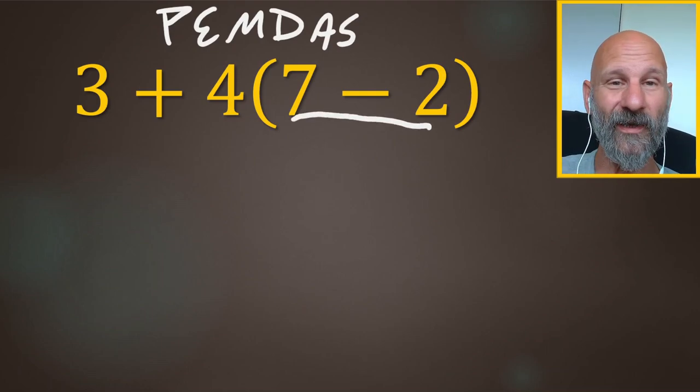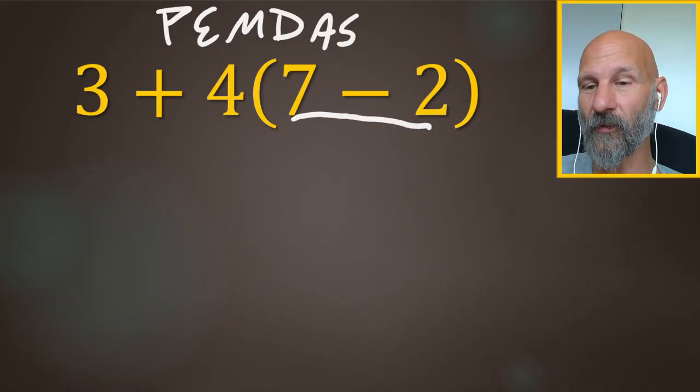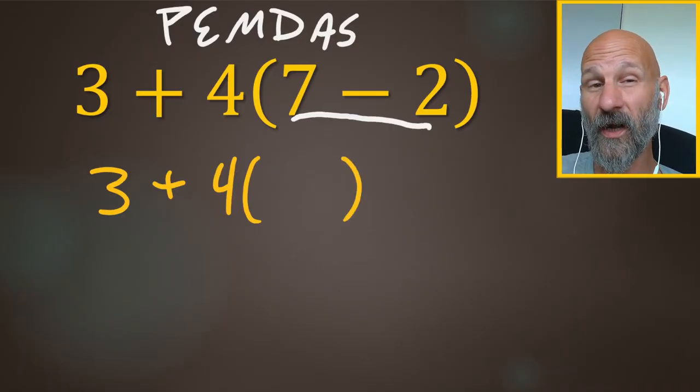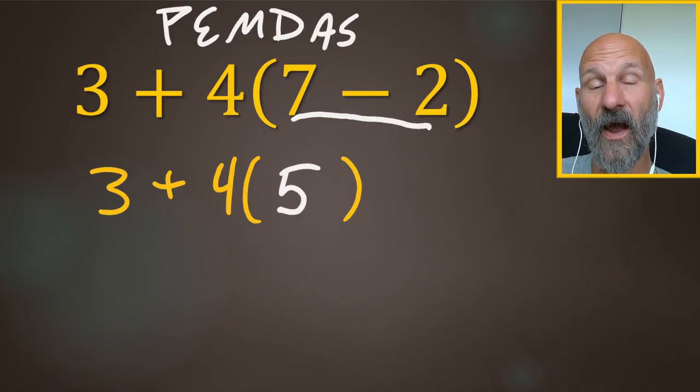Even though you see that 3 plus 4, don't do that yet. The 3 and the plus and the 4 are going to stay. The only thing we're going to change here, we're just doing that parentheses part. So that's going to change to a 5 there.